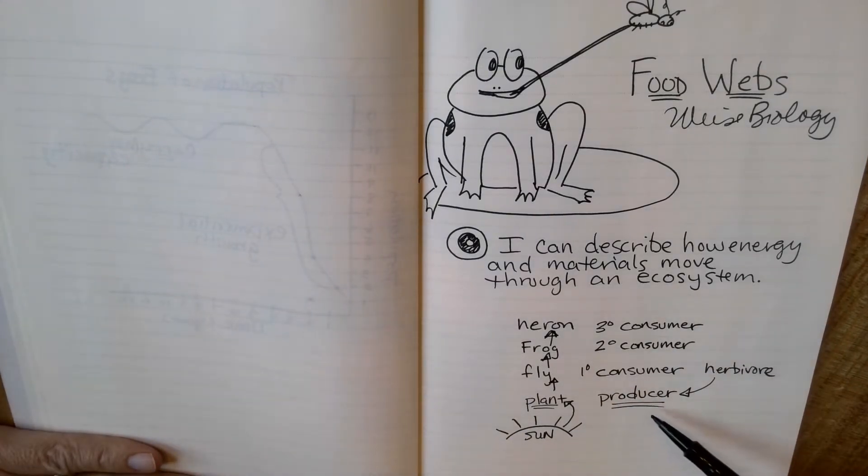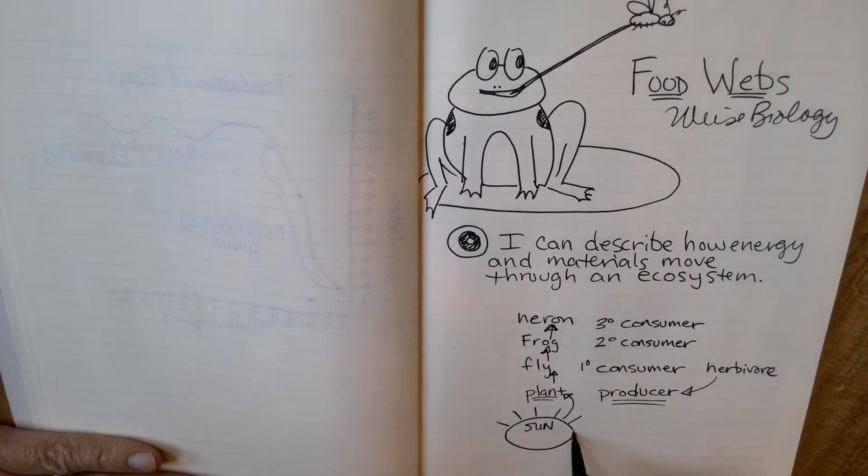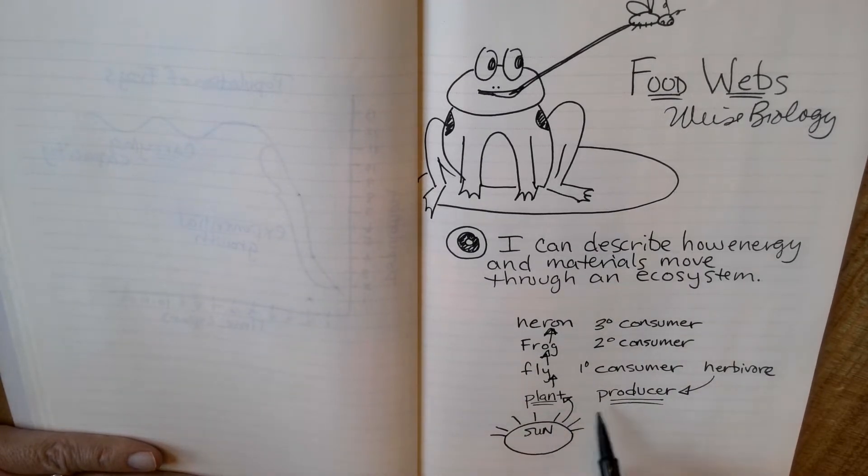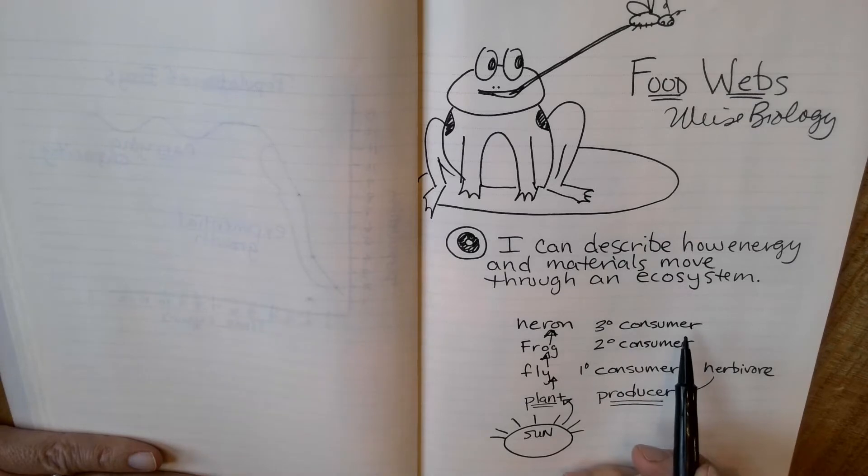All ecosystems start with producers. Anything that can convert the light energy from the sun into the chemical energy of food in a plant that is then eaten by a primary consumer, who is eaten by a secondary consumer, who is then eaten by a tertiary consumer.